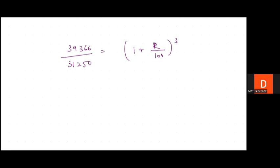Now we simplify 39,366 / 31,250. We try dividing by 3: it won't divide evenly, so we try 2. After performing the division steps, we get 19,683 / 15,625 = (1 + r/100)^3.